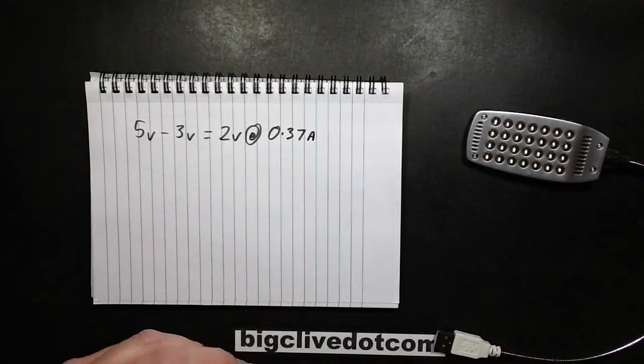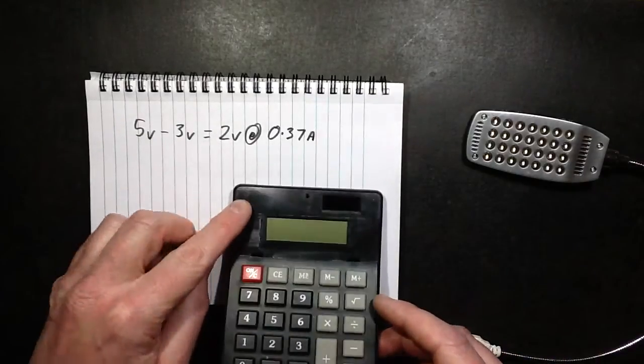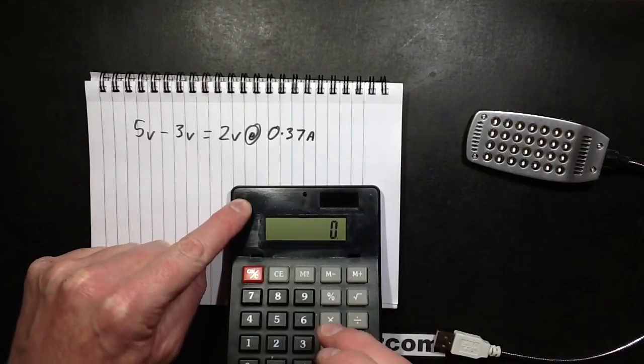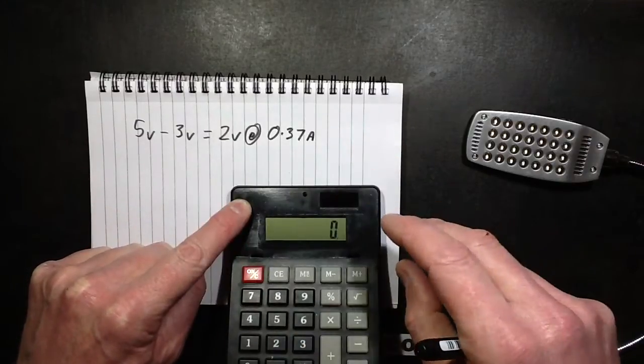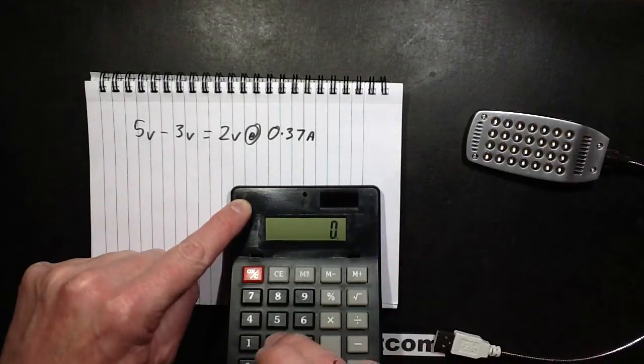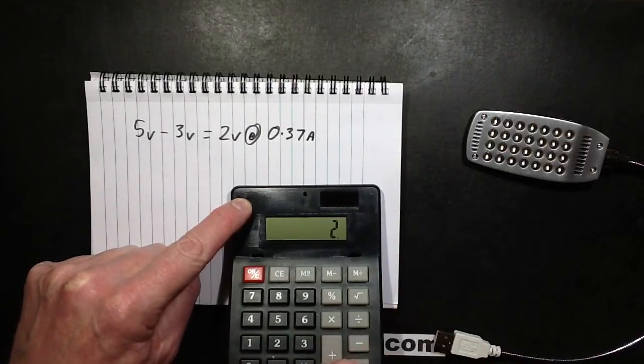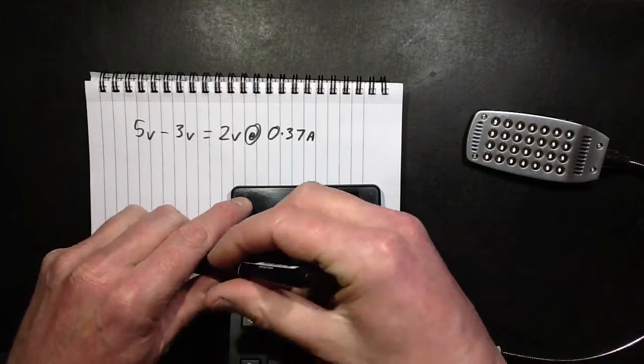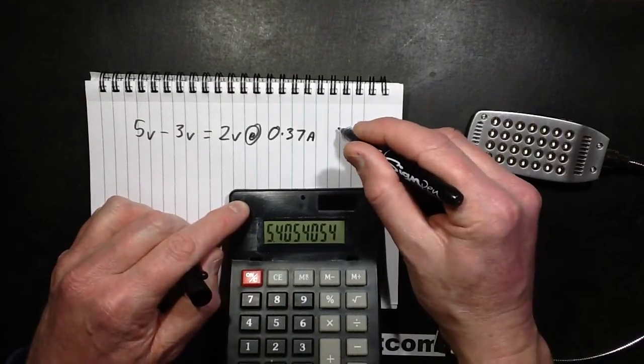Note the new high contrast calculator now I've ripped the horrible bezel off the front. So R equals V over I. Actually let's work out the power dissipation as well. But 2 volts, R equals V over I, 2 divided by 0.37 amps equals a value of about 5.4 ohms.